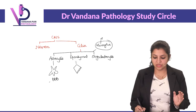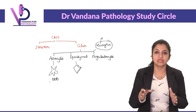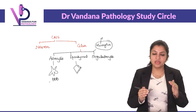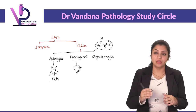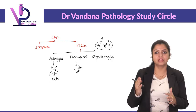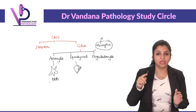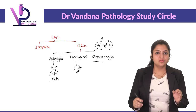Ependymal cells are the cells which line the ventricles. All the CSF-filled ventricles are lined by ependymal cells. They can appear as low cuboidal to columnar epithelium and usually have cilia — simple ciliated columnar epithelium. So ependymal cells line the ventricles all around.